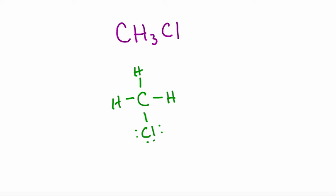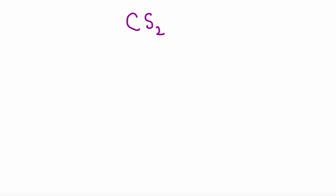Ready for another one? Here's one more. Try carbon disulfide. Pause the video, work your solution, and then unpause the video when you're ready to check your answer. If you did it correctly, you should have carbon in the center, sulfur on either side, and a double bond between each with two lone pairs on each sulfur.